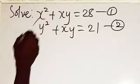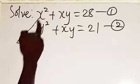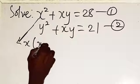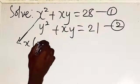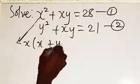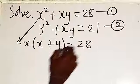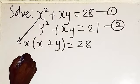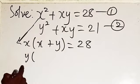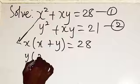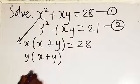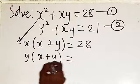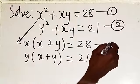From the first equation, x squared plus xy — x is common, so we factorize x out: x(x + y) = 28. From the second equation, y is common: y(y + x) = 21.